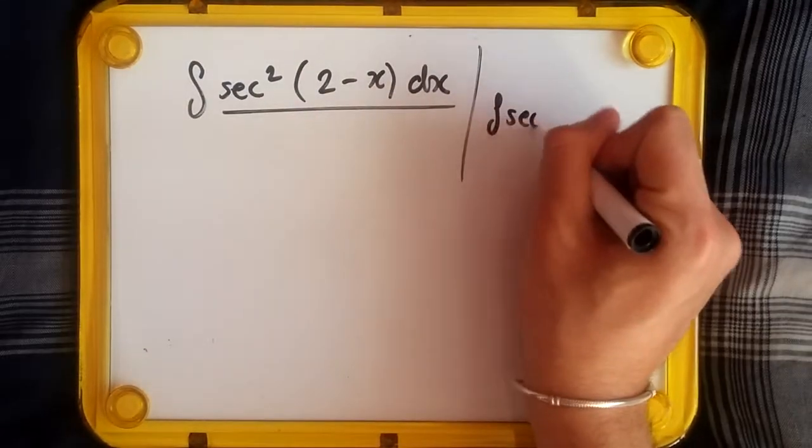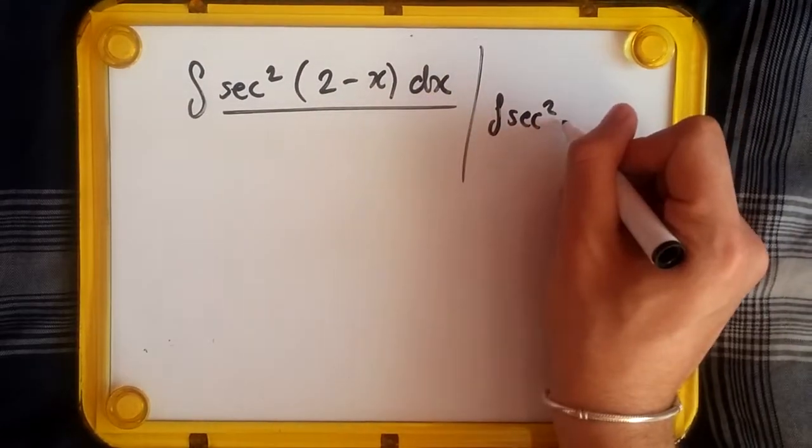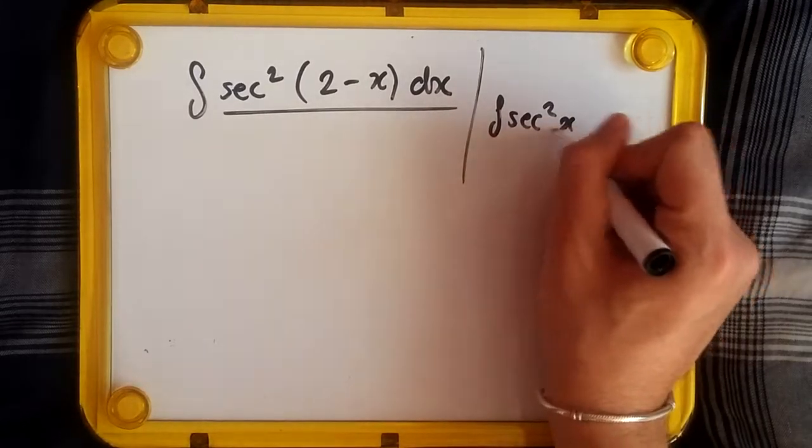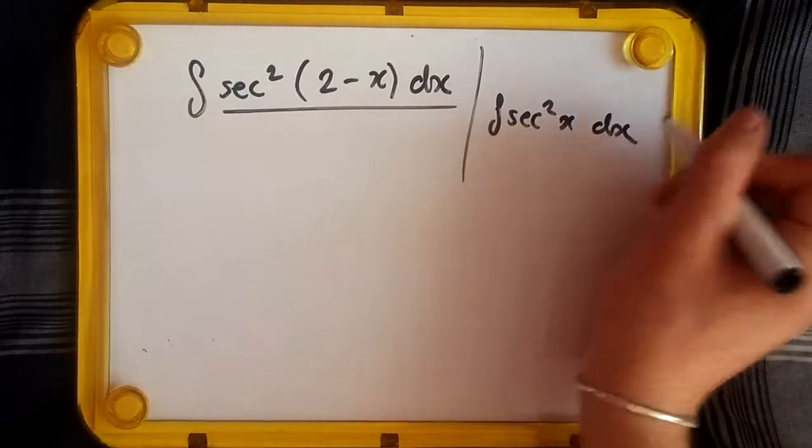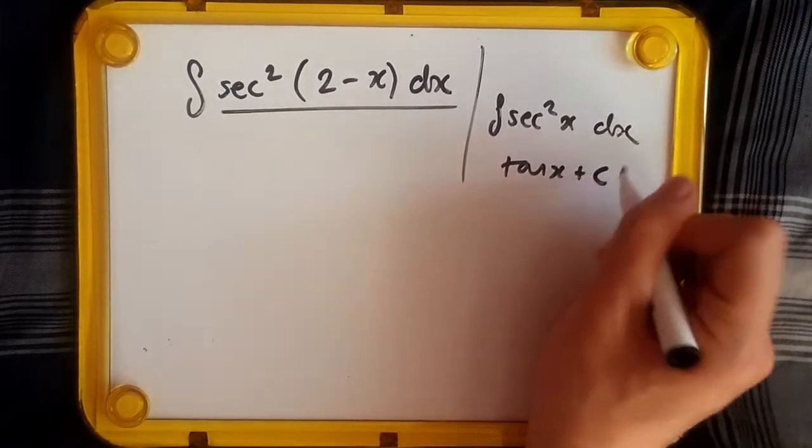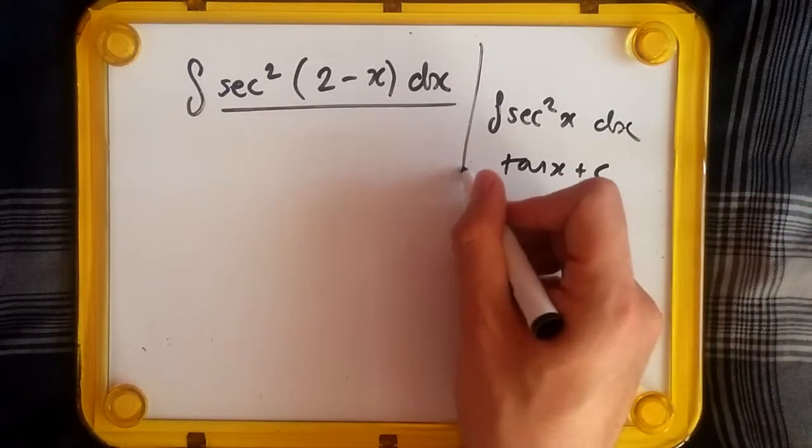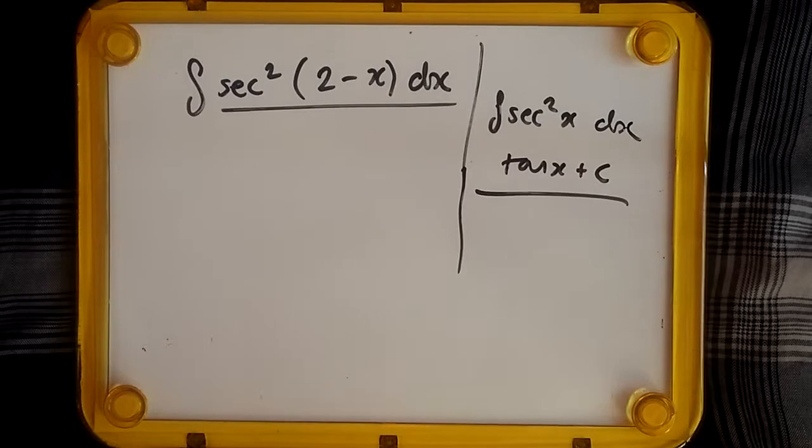...let's just say sec²x dx, this will always return tan x + C. The reason behind this is because before you do this integration, you should have learned from differentiation that the derivative of tan x always returns sec²x.